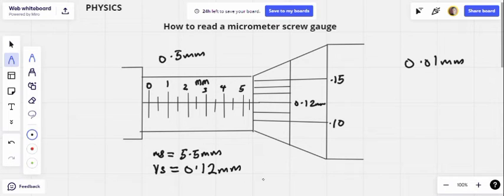So therefore, our total reading, our total scale reading, which is main scale plus vernier scale, will be equal to 5.5 plus 0.12.